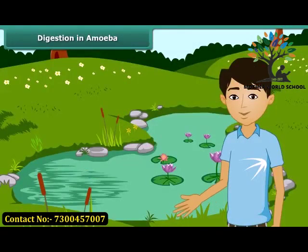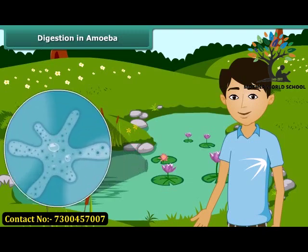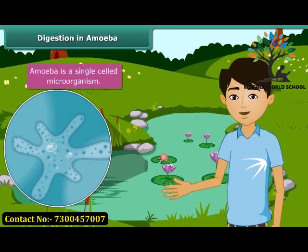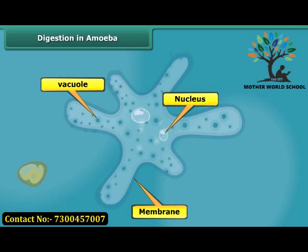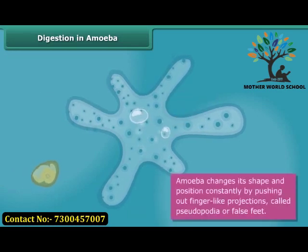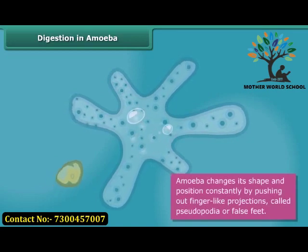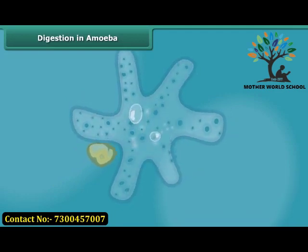You will be surprised to know that there are certain organisms which do not have a mouth and a digestive system, yet they digest food. This organism is amoeba, which is found in ponds. It is a single cell and you cannot see it with the naked eye. It has a cell membrane, a rounded nucleus, and vacuoles in its cytoplasm. It changes its shape and position constantly by pushing out finger-like projections called pseudopodia, or false feet, and captures microscopic organisms as its food.